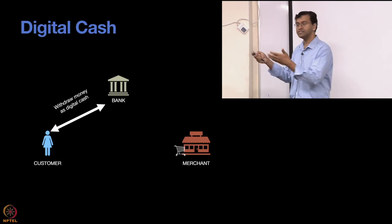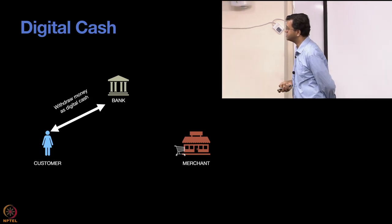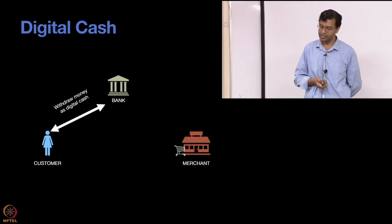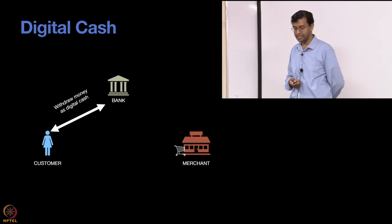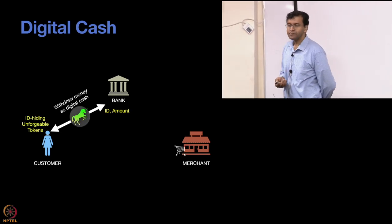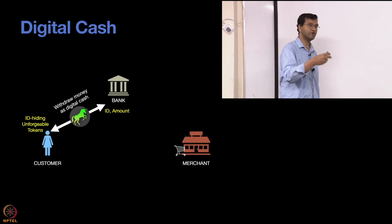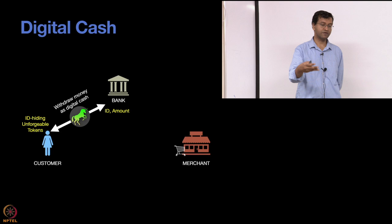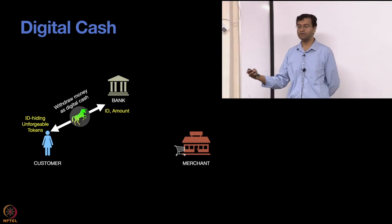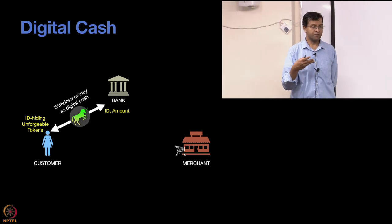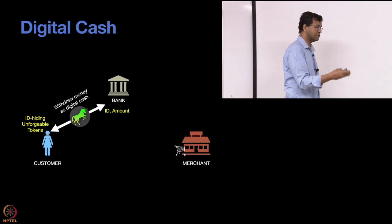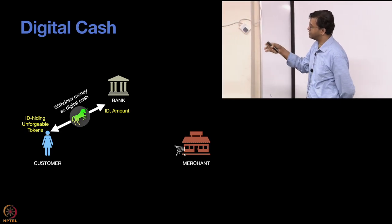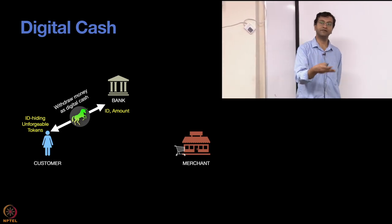The first thing a customer would do is withdraw some cash from the bank. How does digital cash look in this case? The most obvious way would be: you go to the bank, say you want to withdraw this much cash, and the bank gives you some sort of digital token — this is probably how something like the E-rupee would work. But the problem is the bank knows which token they gave you.